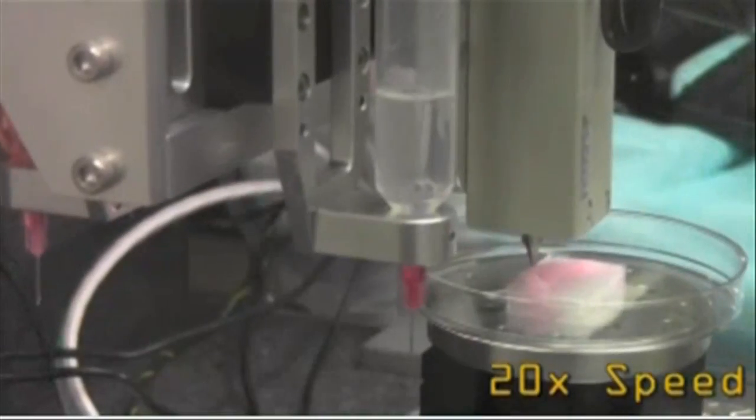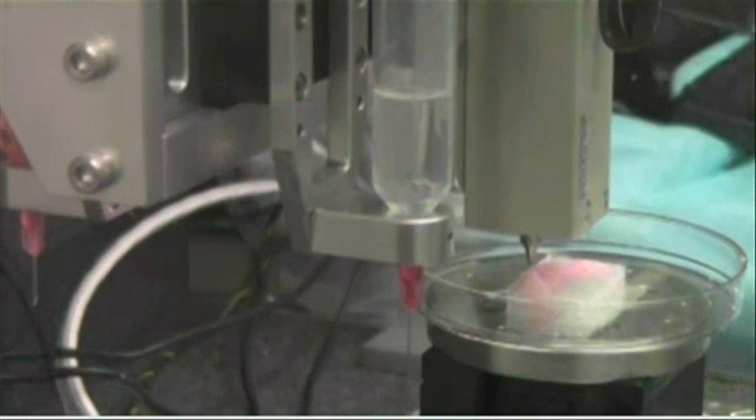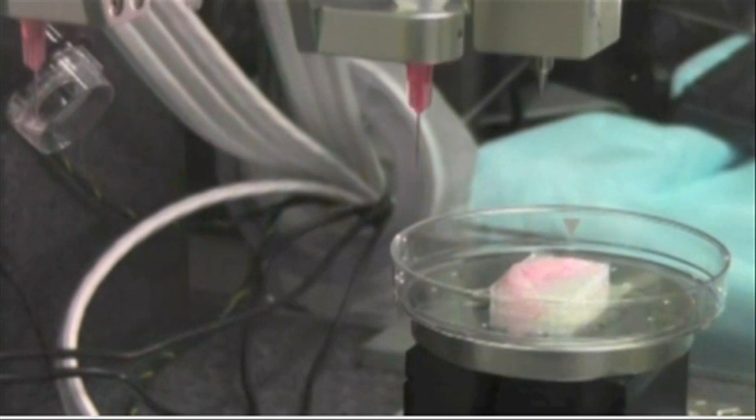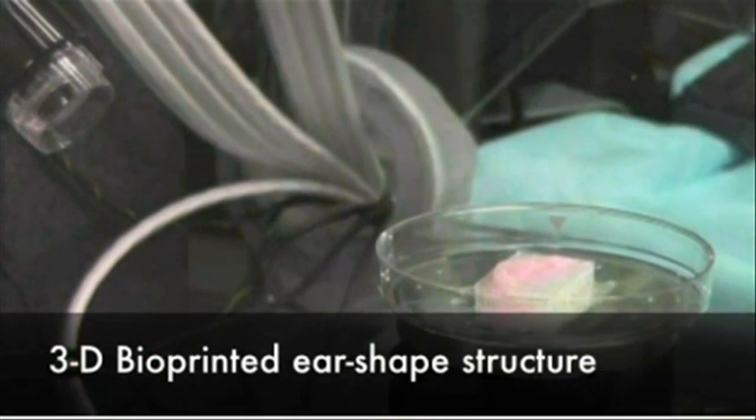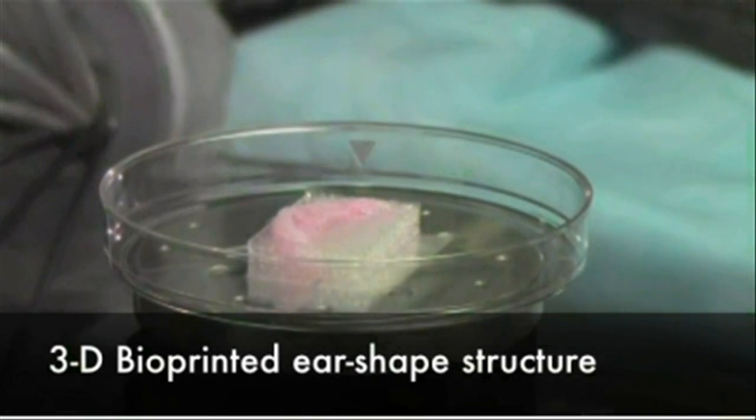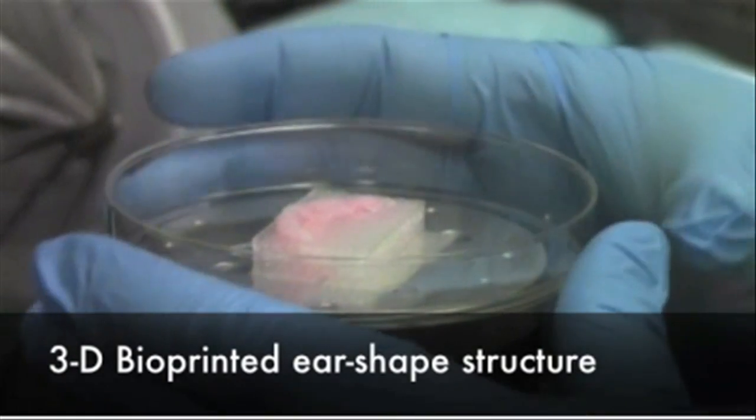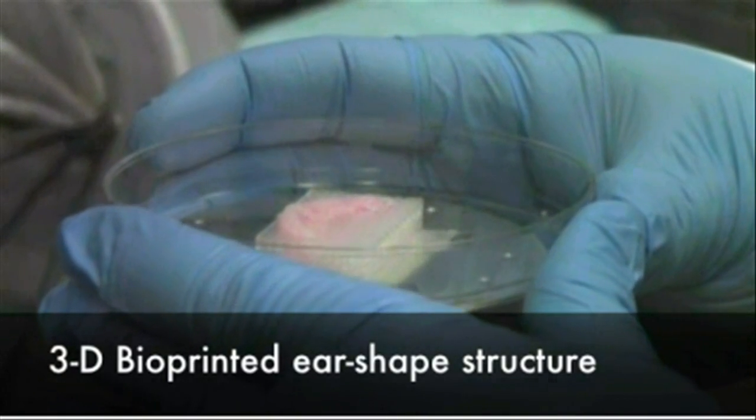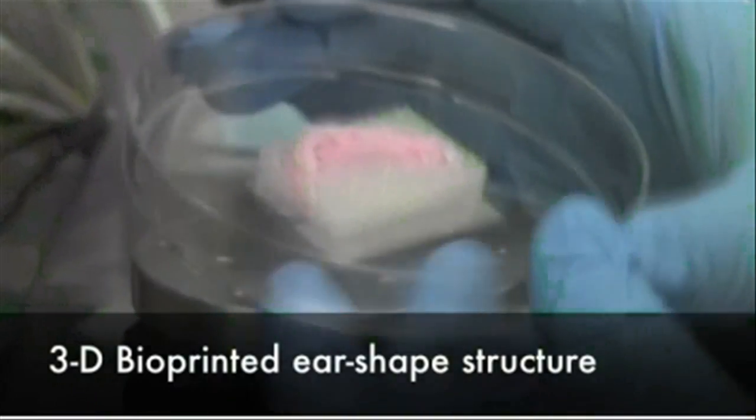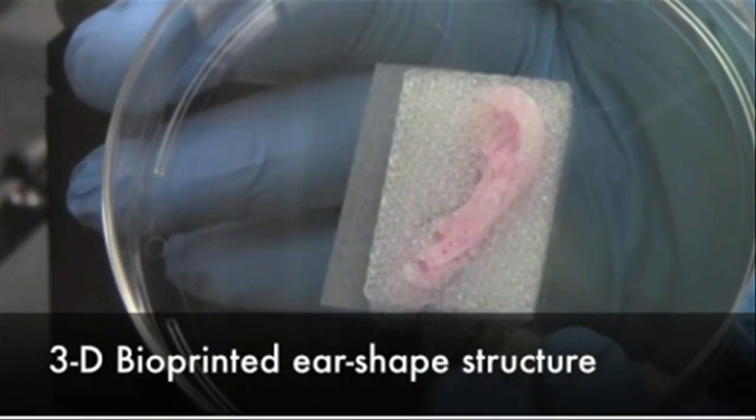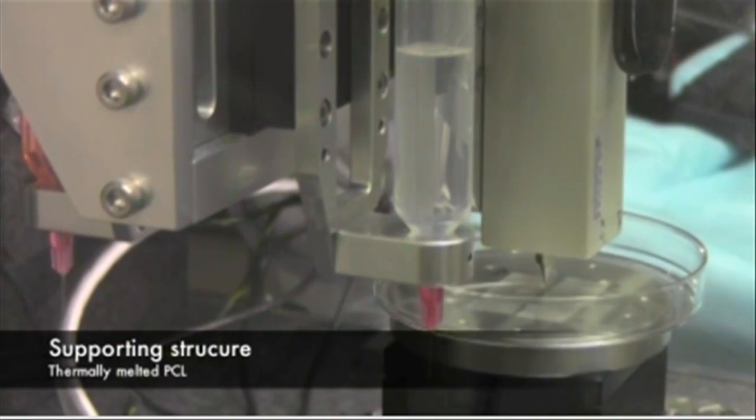The system deposits both biodegradable, plastic-like materials to form the tissue shape and water-based gels that contain the cells. In addition, a strong temporary outer structure is formed. The printing process does not harm the cells.